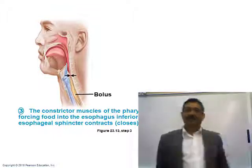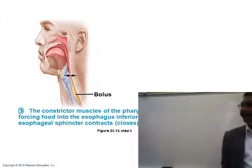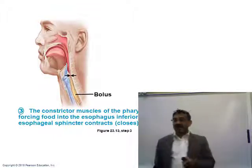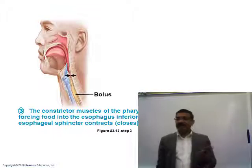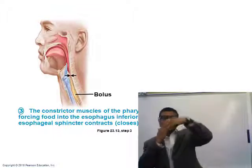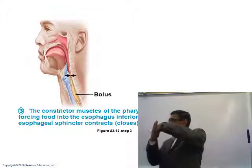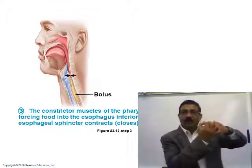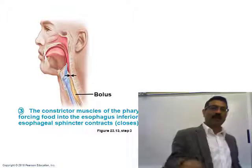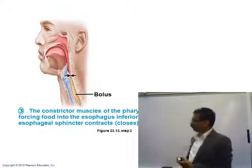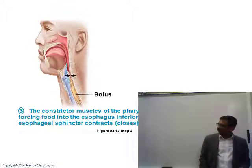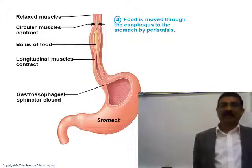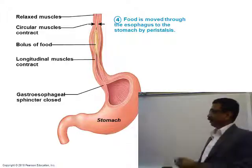The food has no way to move up, so it will go down very fast. The surface of the esophagus is coated with mucus and the peristalsis contractions move the food bolus very quickly towards the stomach. The food bolus moves by peristalsis-type contraction towards the stomach.